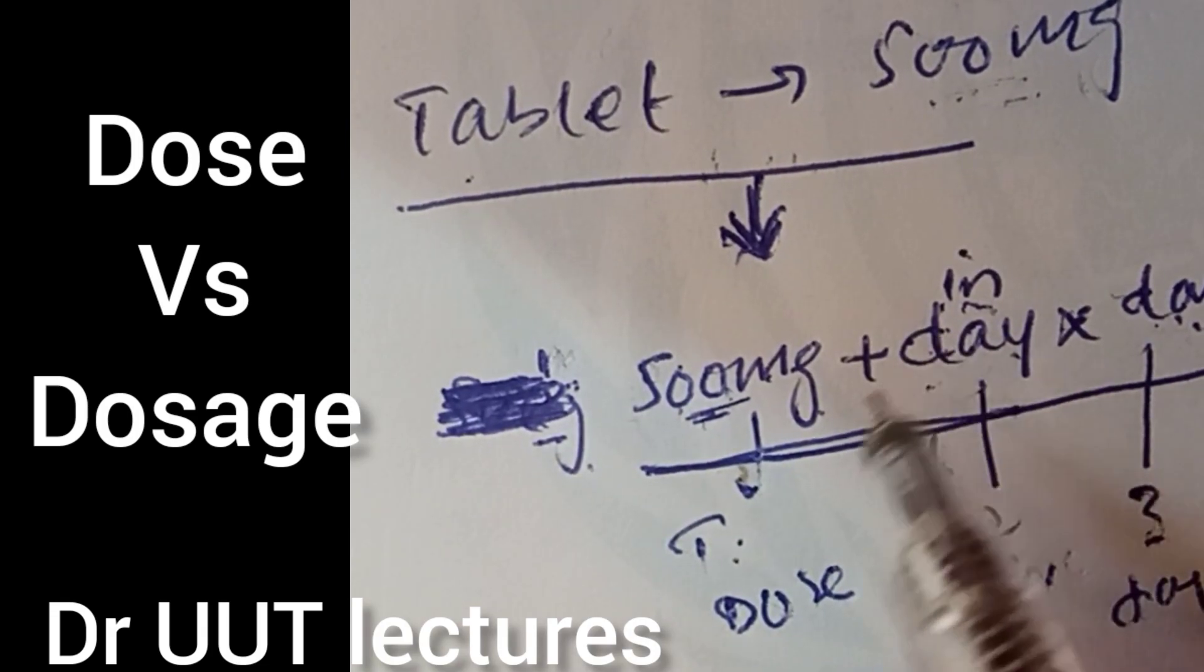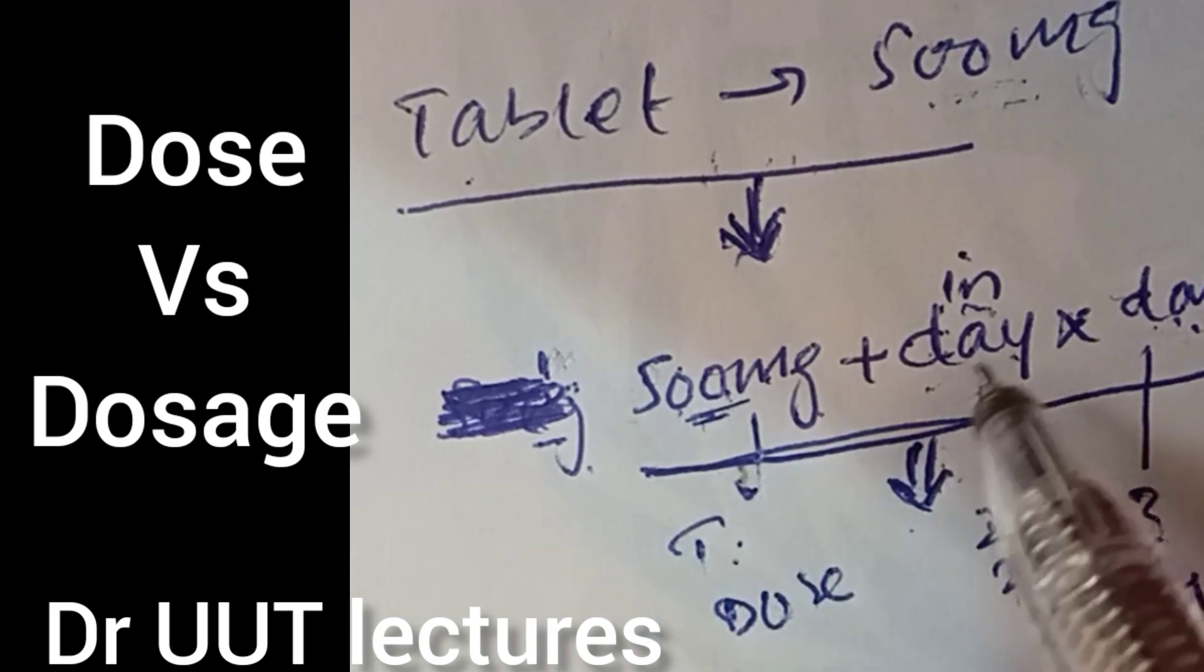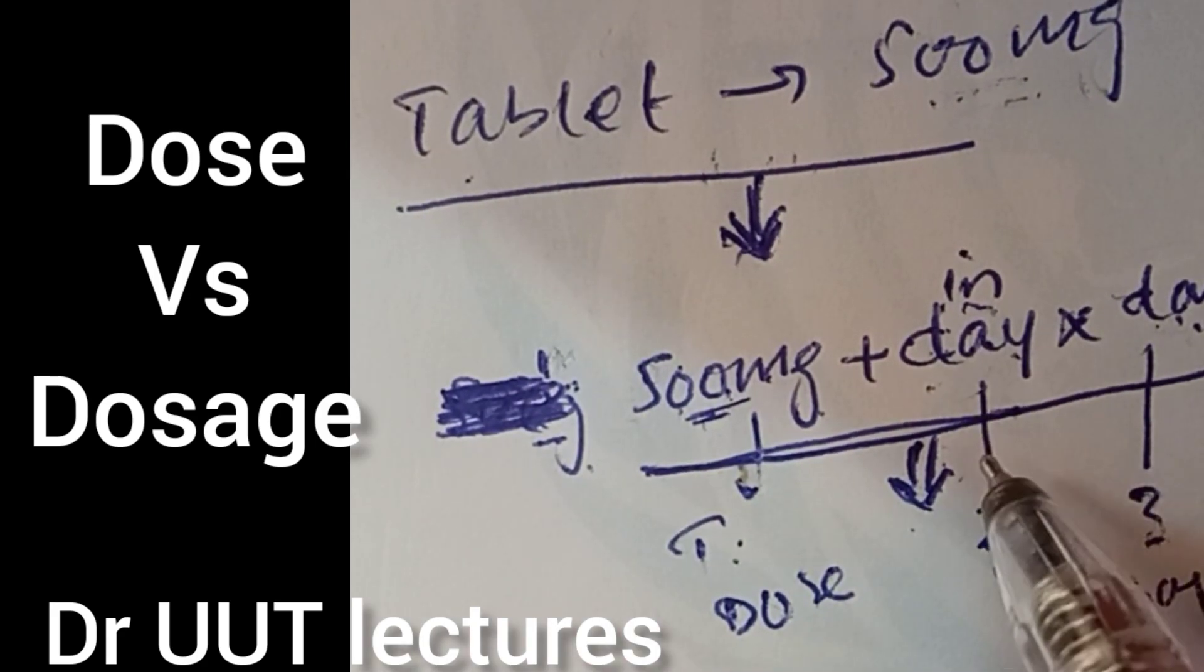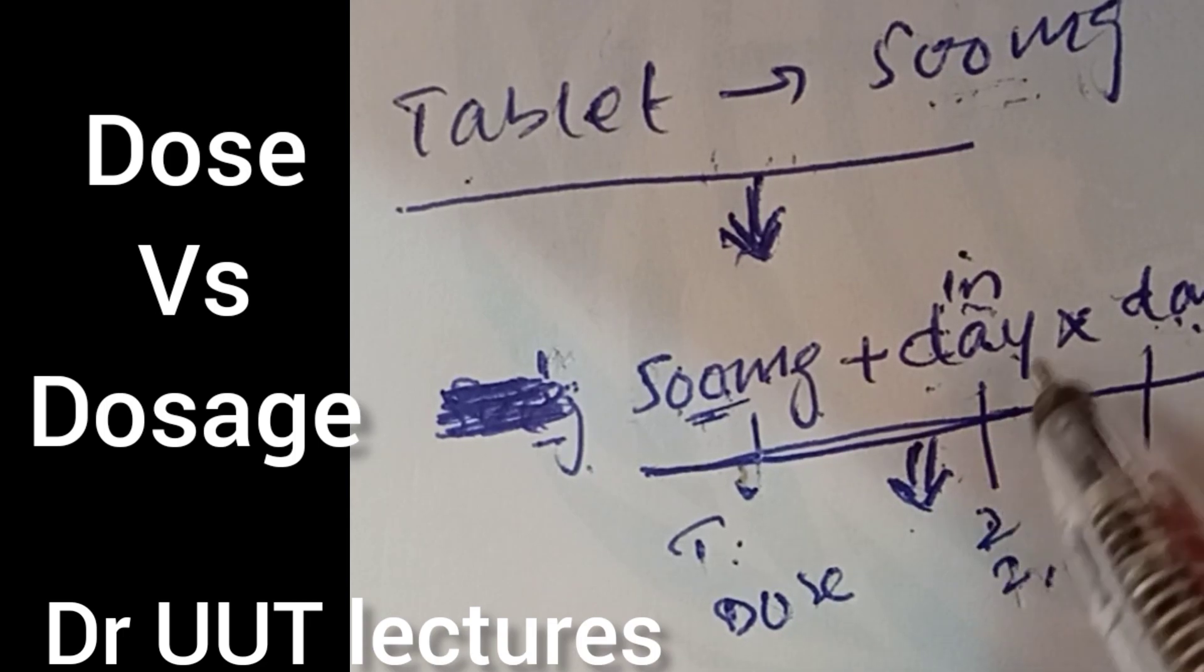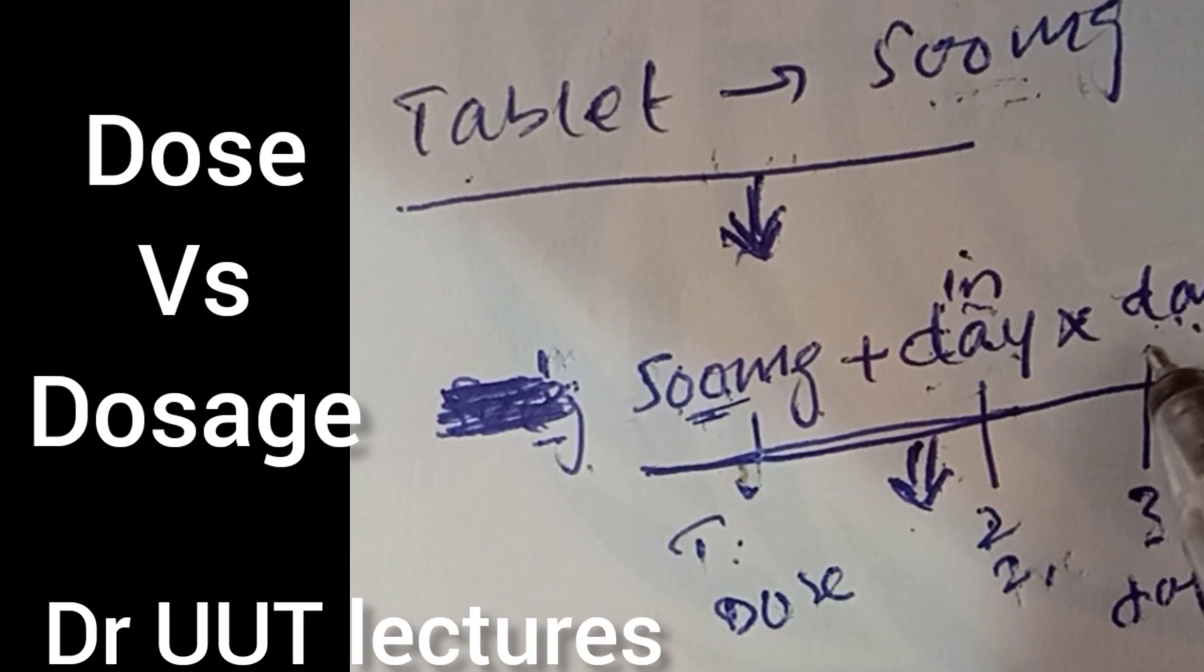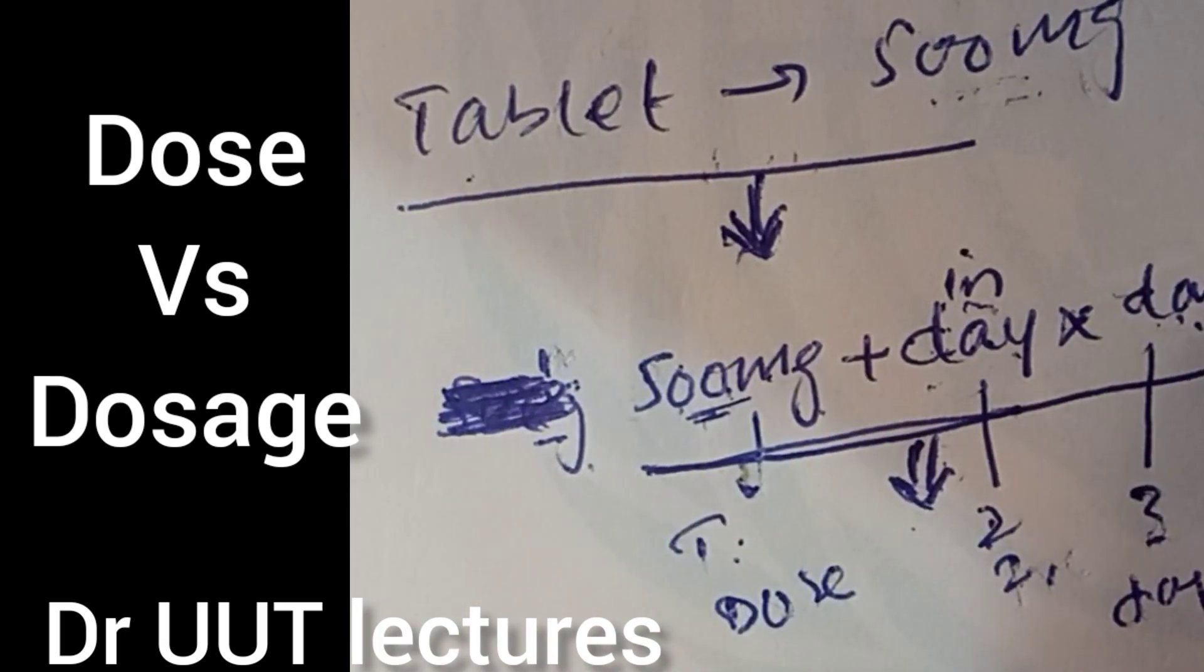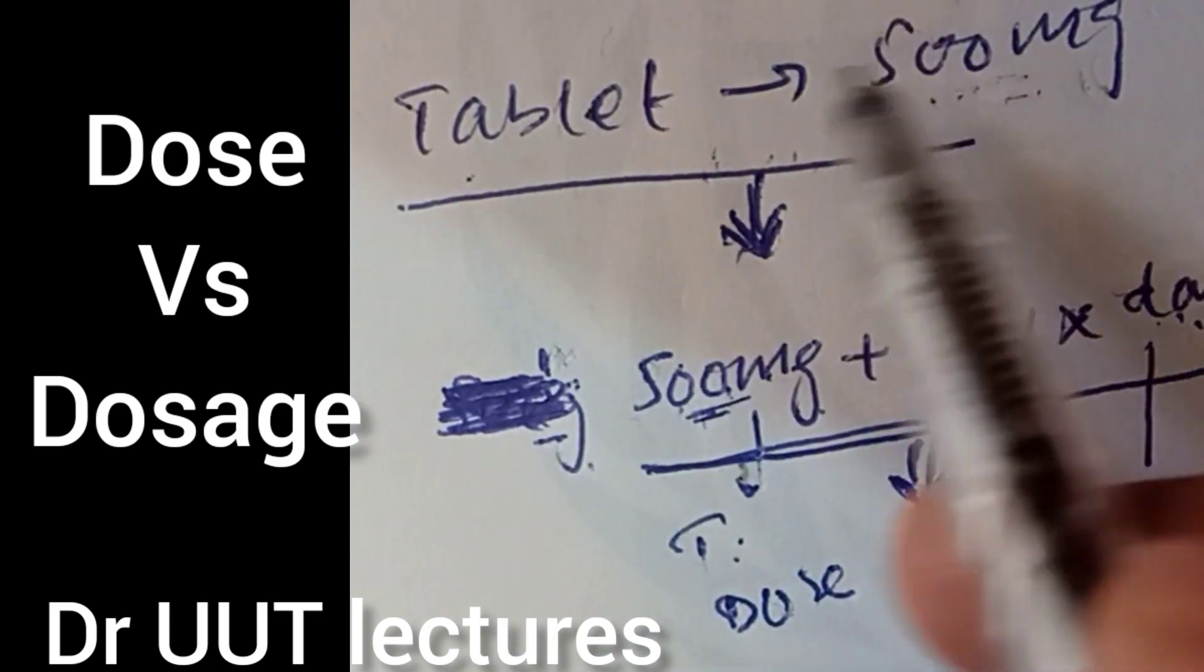The specific dose in days means the frequency - how long you're taking during the day, two times or three times - and for how long over time, for three days, for a week, for how many days. The entire plan is actually dosage; just a specific amount is the dose.